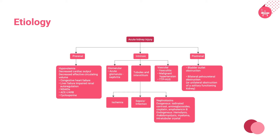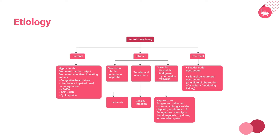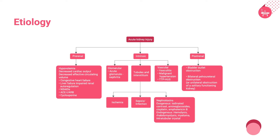Postrenal AKI is the less common type of AKI. It occurs when the flow of urine is either partially or completely blocked, resulting in a buildup of back pressure within the renal tubules. This leads to a raised Bowman's capsule hydrostatic pressure — a pressure which opposes filtration — and thereby reduced GFR. The obstruction may occur anywhere from the renal pelvis to the tip of the urethra, but in general, for a patient with normal functional kidneys, a bilateral obstruction is necessary for AKI to occur.